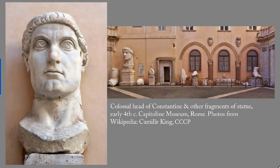Trajan's Column dates to 106 to 113 AD and is still in the Forum in Rome. And this is the Colossal Head of Constantine from the early 4th century, also in the Capitoline Museums in Rome. I've given you this picture just to give you an idea of the scale — this is a person-sized doorway, and this is the head of Constantine. It is very, very large.